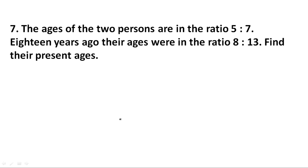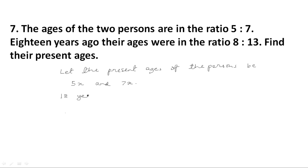Question 7: The ages of two persons are in the ratio 5 is to 7. Eighteen years ago their ages were in the ratio 8 is to 13. Find their present ages. Let the present ages of the persons be 5x and 7x. Eighteen years ago, the age of the first person would be 5x minus 18, and the second person's age would be 7x minus 18, and this ratio is equal to 8 is to 13.